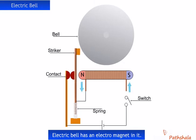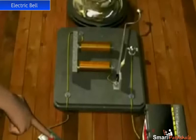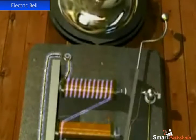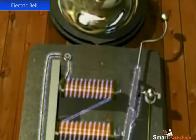There is a contact screw near the iron strip. When the iron strip is in contact with the screw, the current flows through the coil and the coil acts as an electromagnet. It then pulls the iron strip. In the process, the hammer at the end of the strip strikes the gong of the bell to produce a sound.